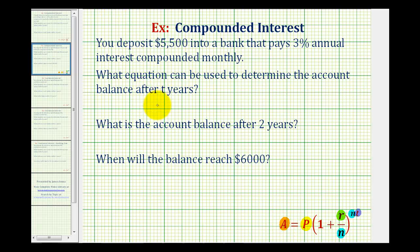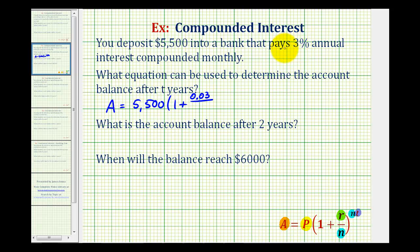To find the equation that models this account balance, we'll have A equals the principal or starting amount of $5,500, times the quantity one plus the annual interest rate expressed as a decimal. Three percent as a decimal is 0.03 — drop the percent sign and divide by 100. N is the number of compounds per year; it's compounded monthly so N is 12. We raise this to the power of N times T, where T is the unknown time in years.